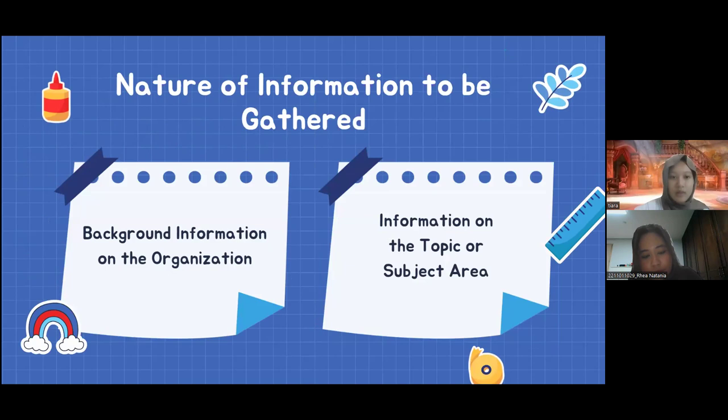Next is the nature of information to be gathered. The first is background information on the organization itself — we have to find background information from the organization we are researching. The next is information on the topic, subject, or area we select.